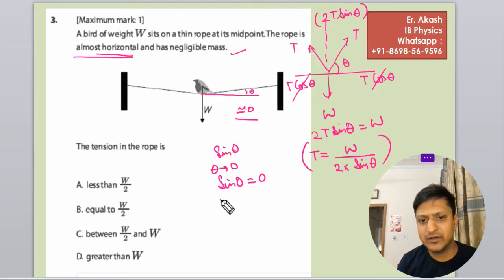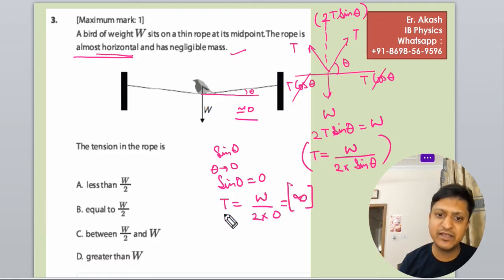It becomes T equals to W over 2 into 0. And you know that when we divide anything with 0, it becomes infinity. The value has increased and value is very high.